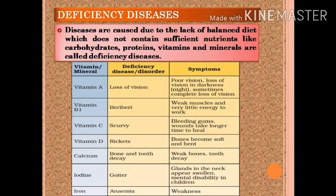With a deficiency of calcium, we can have bone and tooth decay, with symptoms of weak bones and tooth decay. With a deficiency of iodine, we can have goiter, with symptoms of swollen glands in the neck and mental disability in children. With a deficiency of iron, we can have anemia, with weakness as the main symptom. To prevent these deficiency diseases, we should have a balanced diet — food which has all the nutrients in the right amount.